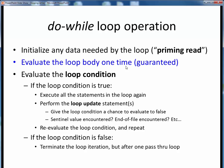Then, if the loop continuation condition is true, we make one more iteration of the loop body, and we continue to do so as long as the loop condition continues to evaluate to true. Remember that each time through the loop, towards the end, we perform the loop update statements, which give the loop condition a chance to finally become false. Once the loop condition does evaluate to false, loop iteration ends, and we're done with our do-while loop.